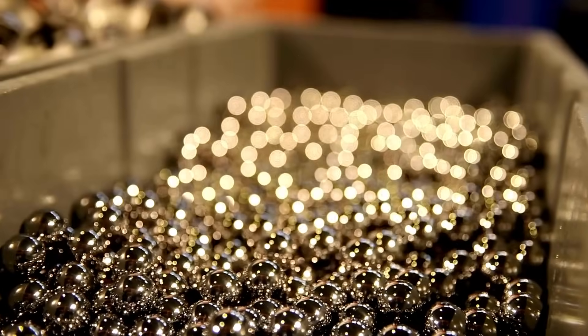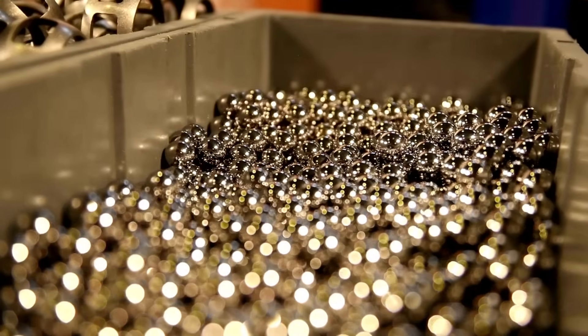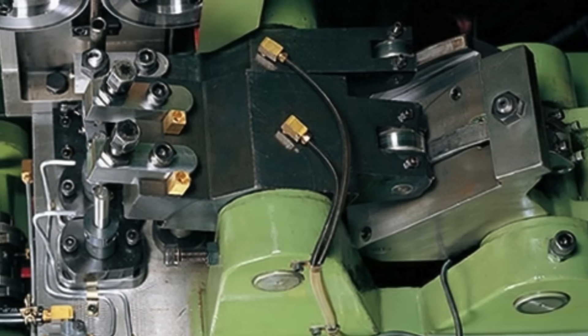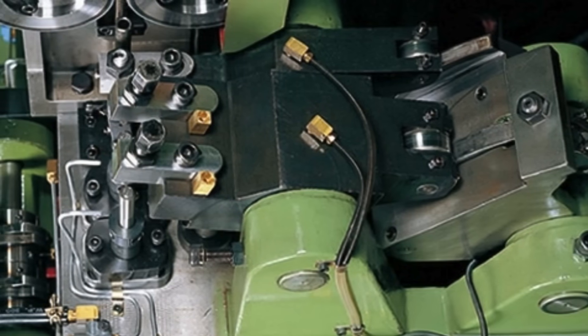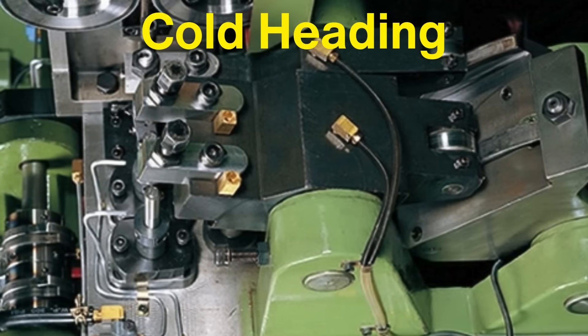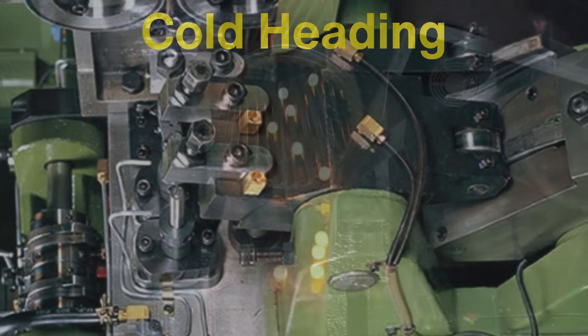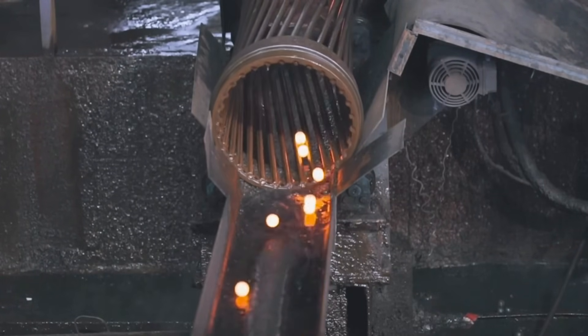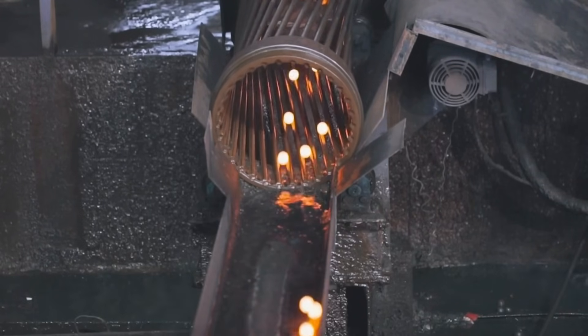One of the most interesting aspects of ball bearing production is how the balls themselves are made. The steel balls start as small, roughly spherical blanks cut from wire. These blanks are then placed into a machine that shapes them into perfect spheres using a process called cold-heading. In this process, the blanks are pressed into a mold at high speed and force, transforming them into smooth, uniform spheres.